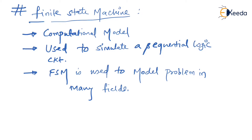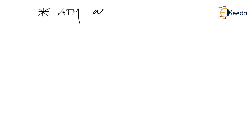To give a real-time example, we will take the example of an Automatic Teller Machine, that is ATM, and explain it as an FSM. Finite state machines are represented using state diagrams, similar to those we drew for synchronous and asynchronous counters in previous lectures.